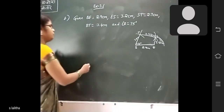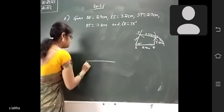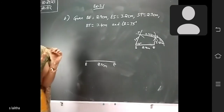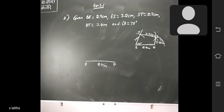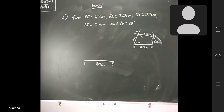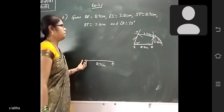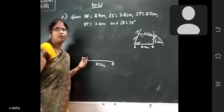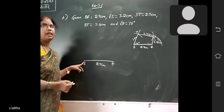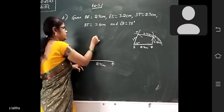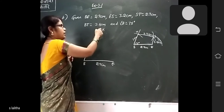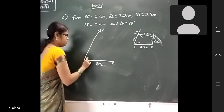Now draw the original picture. First draw line segment DE = 2.9 cm. Take your protractor — all of you — keep it on T. This line segment will move this side, so you measure inner scale 75 degrees. Draw a long line and mark it X. This is 75 degrees.